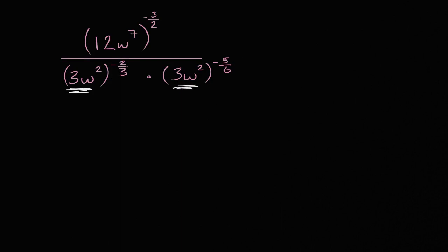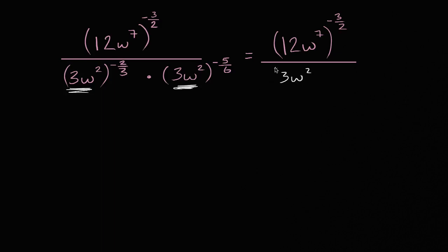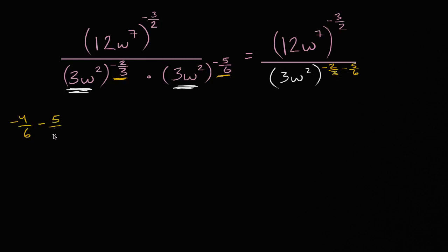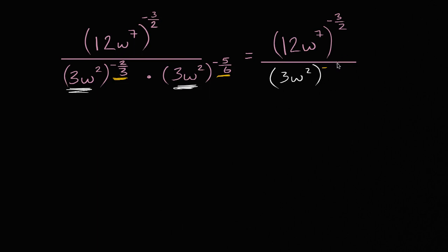This is going to equal our numerator — we can just rewrite it as 12w to the 7th power over negative 3/2 — over our denominator written as the base 3w squared, and we can add these two exponents: negative 2/3 plus negative 5/6. Negative 2/3 is the same as negative 4/6, and negative 4/6 minus 5/6 equals negative 9/6, which equals negative 3/2. So that exponent is negative 3/2.